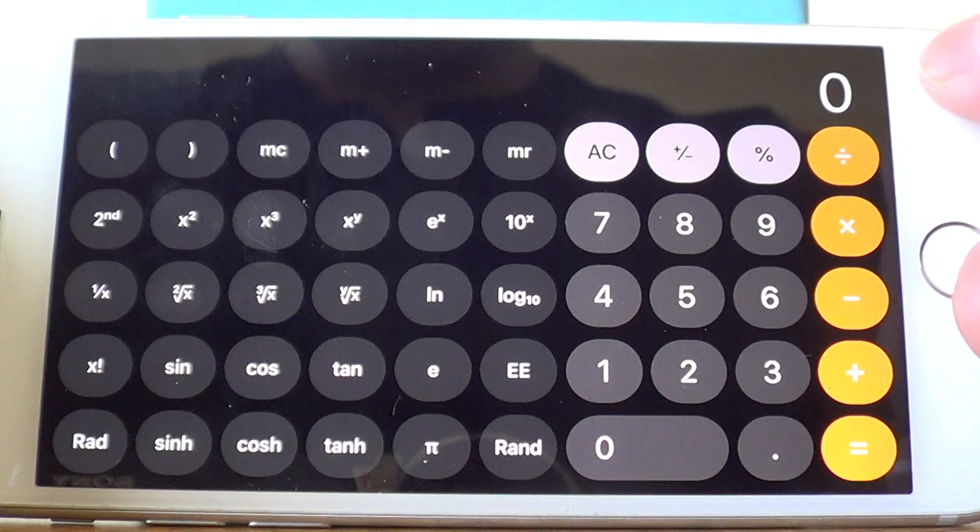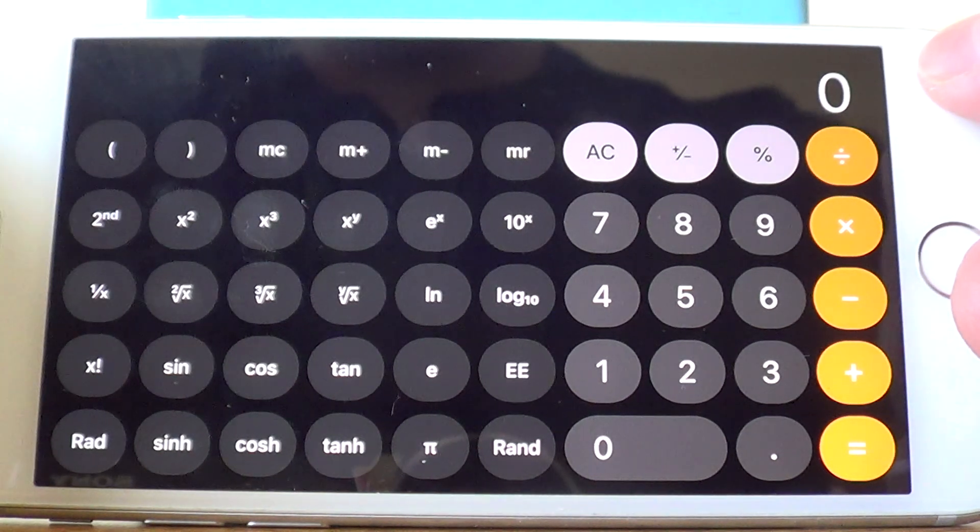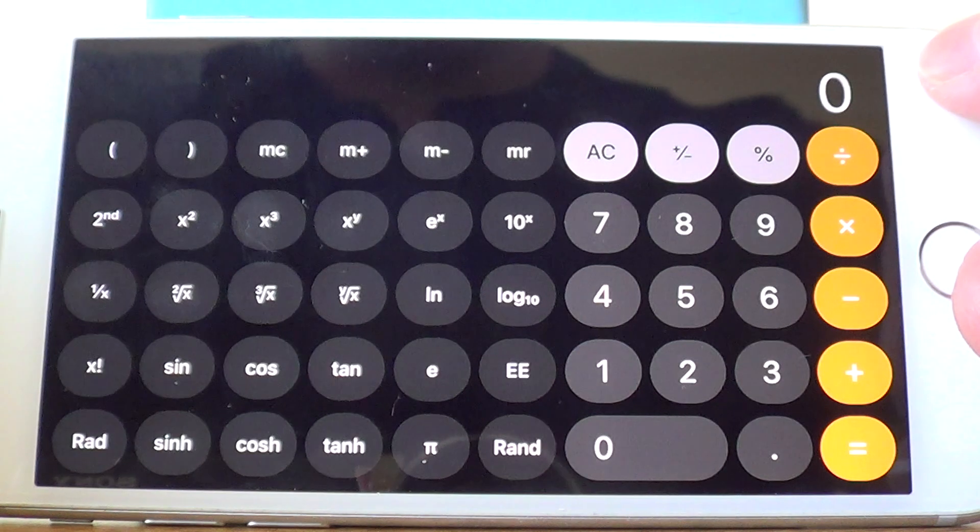Once you've opened the calculator app, turn your calculator sideways so it is in scientific mode.